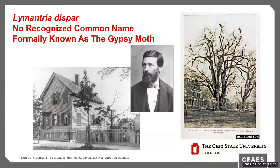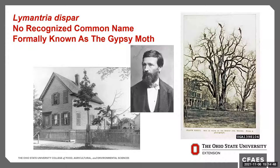Lymantria dispar is the scientific name of what was formerly known as the gypsy moth, and currently has no recognized common name. These photos are from the 1800s. This insect was introduced on purpose to our country by this individual in the Massachusetts area. The insect escaped, he told authorities, and they monitored the population but didn't think it would be an issue. Several years later there was an outbreak, and early eradication efforts — including removing egg masses from trees — were ultimately not successful, and we've had to live with it ever since.